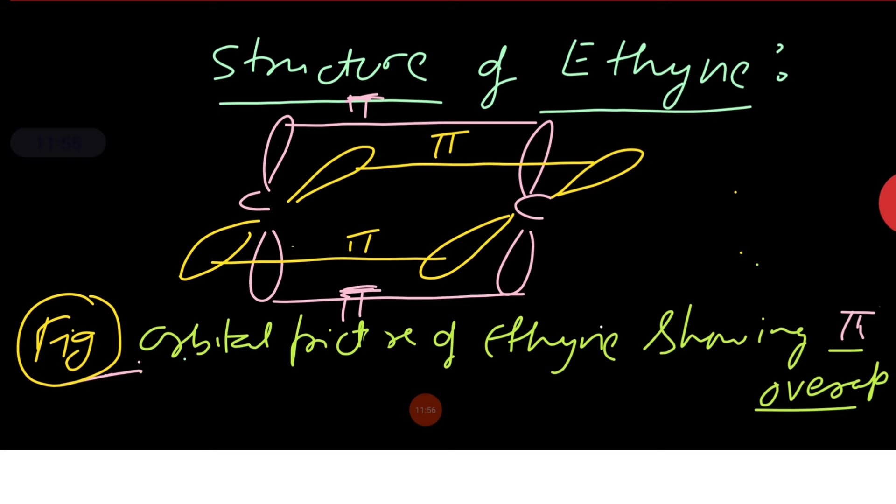Each carbon has two unhybridized p orbitals which are perpendicular to each other as well as to the plane of carbon-carbon sigma bond. 2p orbitals of one carbon atom are parallel to 2p orbitals of other carbon atom which undergoes sidewise overlapping to form two pi bonds. Hence, ethyne molecule has one carbon-carbon sigma bond and two carbon-hydrogen sigma bonds and two carbon-carbon pi bonds.